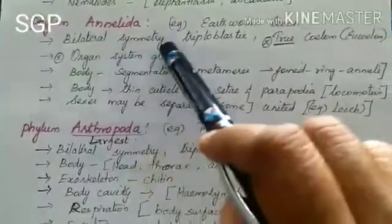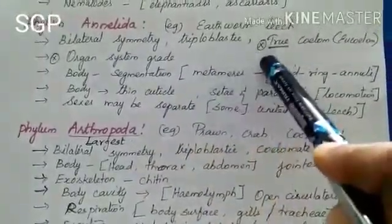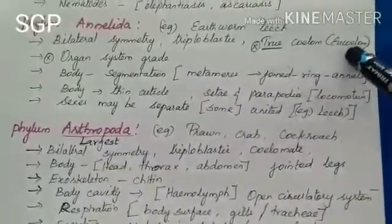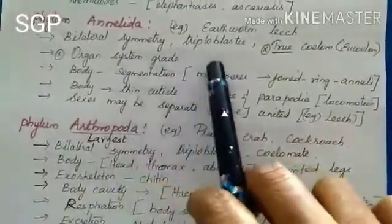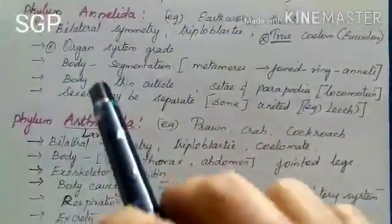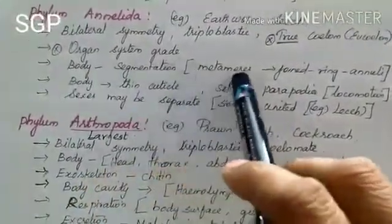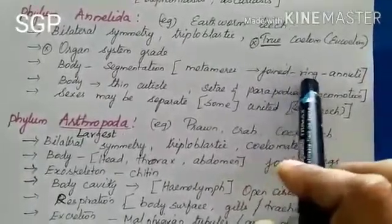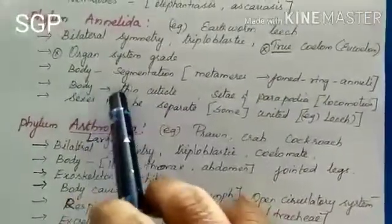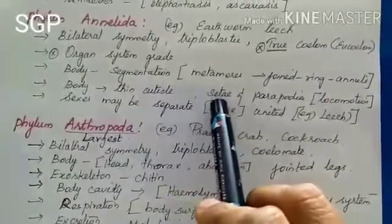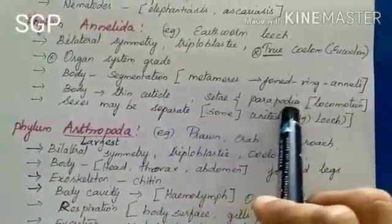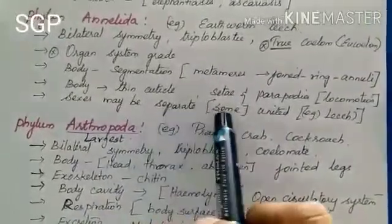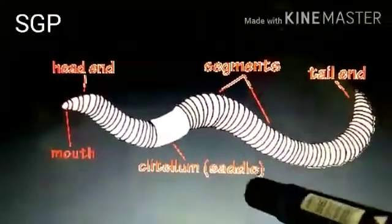The next phylum is Annelida. Annelida also shows bilateral symmetry and is triploblastic. In this group, true coeloms — also known as eucoelom — first appear. Organ grade of organization is present. The body shows segmentation; these segments are called metameres, which are externally joined as ring-like structures called annuli. The body is covered by a thin cuticle and bears setae or parapodia — fine hair-like structures used for locomotion. Sexes may be separate or united. An example is the earthworm.